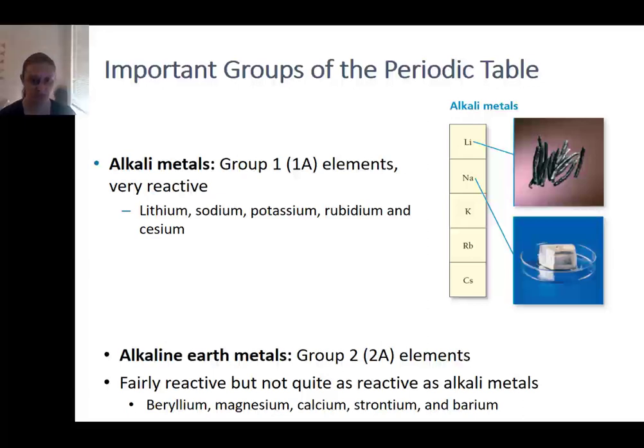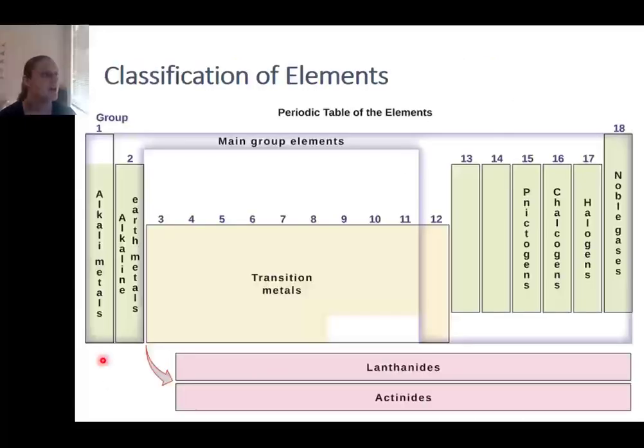Group 2 metals are known as the alkaline earth metals, and they are also generally quite reactive, although somewhat less reactive than the alkaline metals. There are various classifications of the elements. The groups that you should be familiar with are the alkaline metals, the alkaline earth metals, the halogens, and the noble gases.